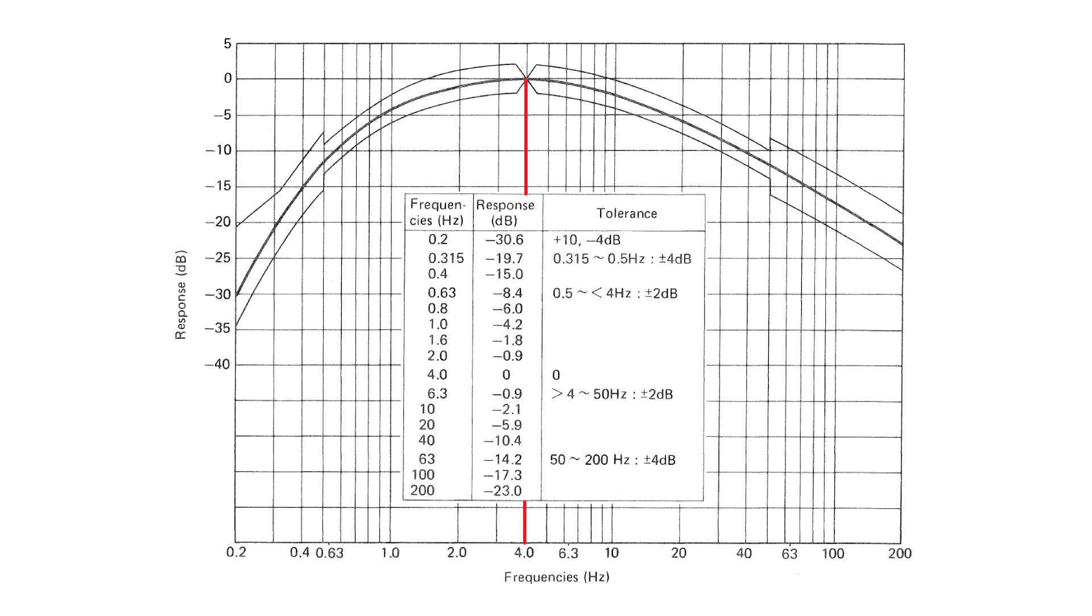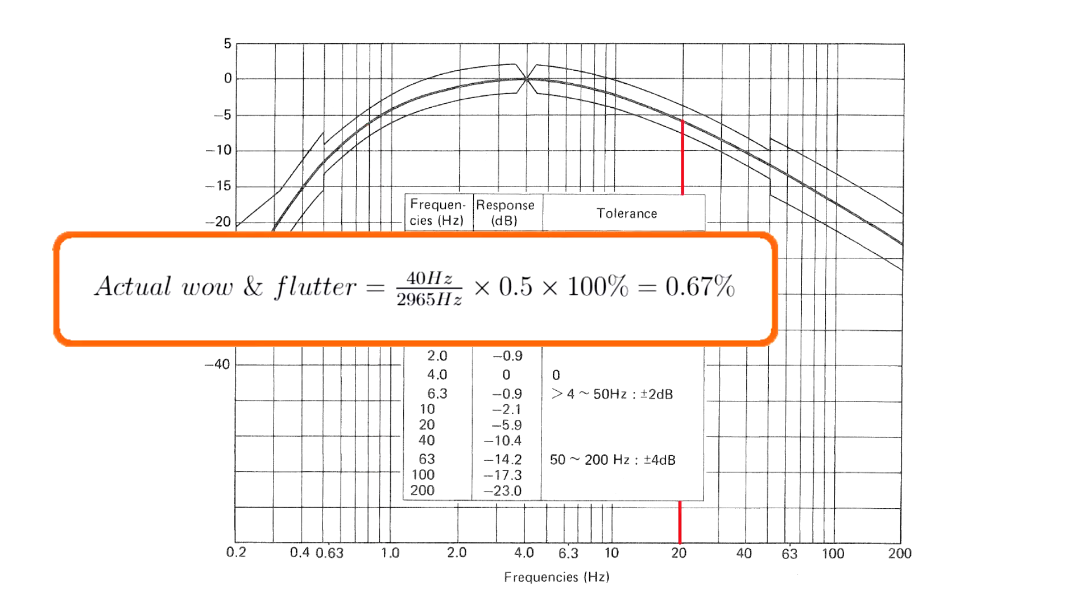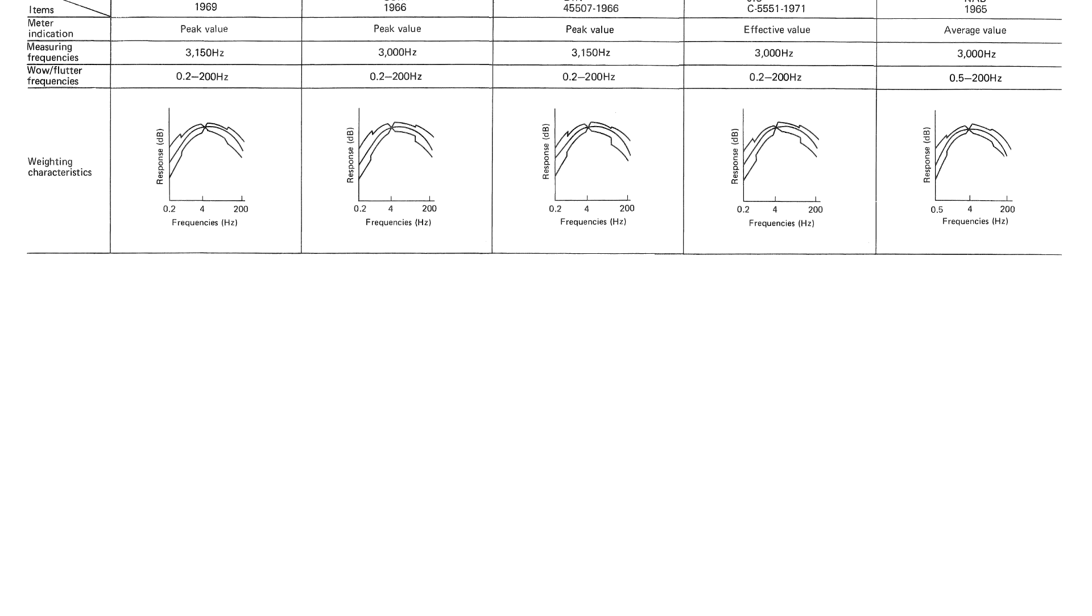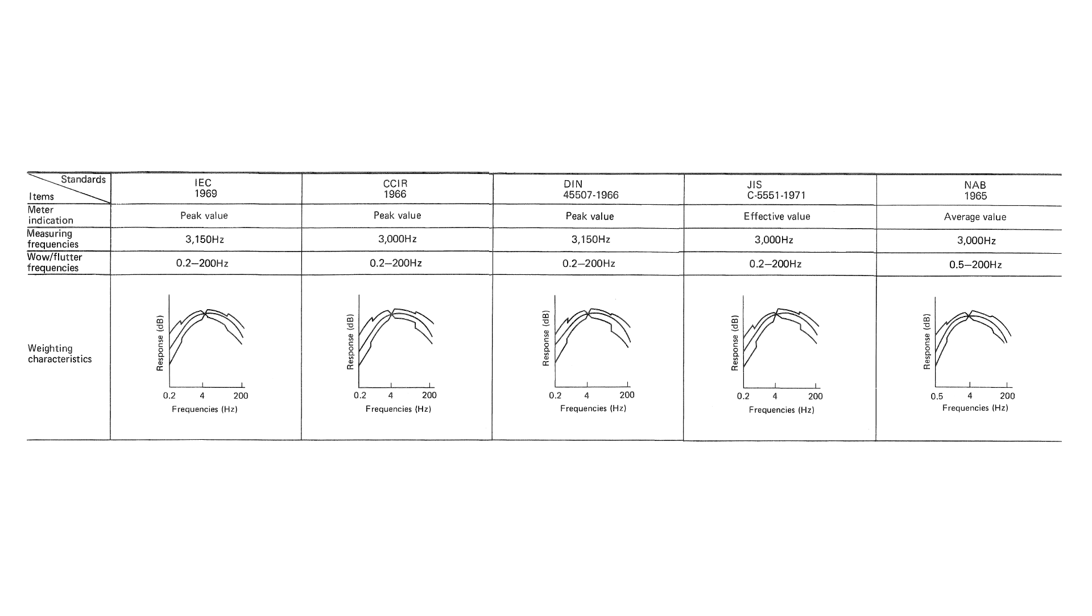This rate has been established experimentally as the most objectionable. If the rate of irregularities drops to 0.8 Hz or increases to 20 Hz, the irritation coefficient is half. By the end of 1960s, five standards for measuring Wow and Flutter were in use internationally. The standards are based on almost identical weighting curves, but differ in choosing of the test frequency and, more importantly, meter indication.